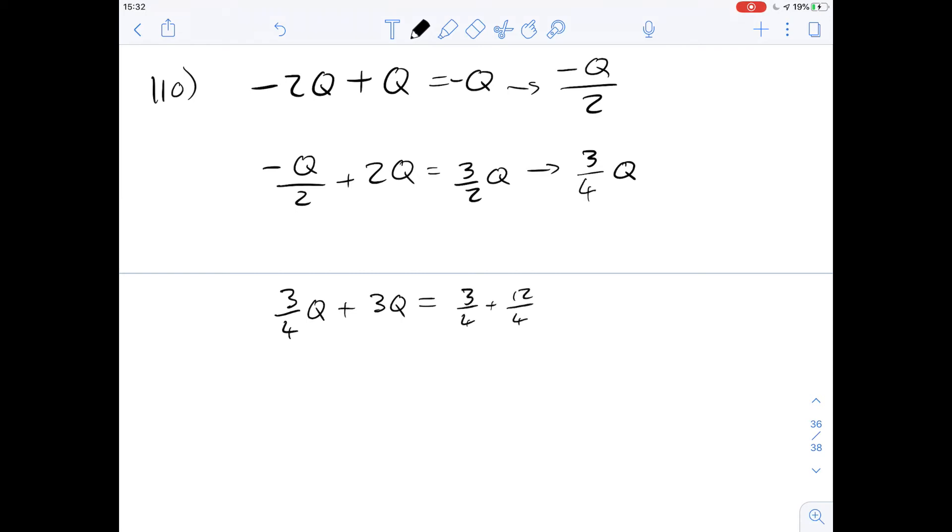So the combined charge they have is going to be 3 over 4 plus 12 over 4q which is then going to be 15 over 4q and that's going to be spread between the two of them and they're both going to have the same amount of charge spread equally because all of the spheres are identical.